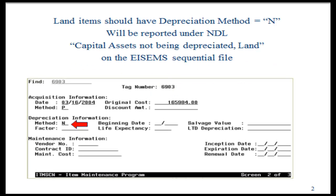The O100 asset class LAN items should have a depreciation method of N for no in the item screen. The amounts from those tags will be recorded under the NDL Capital Assets Not Being Depreciated Land section of the EIS-EMS sequential file.